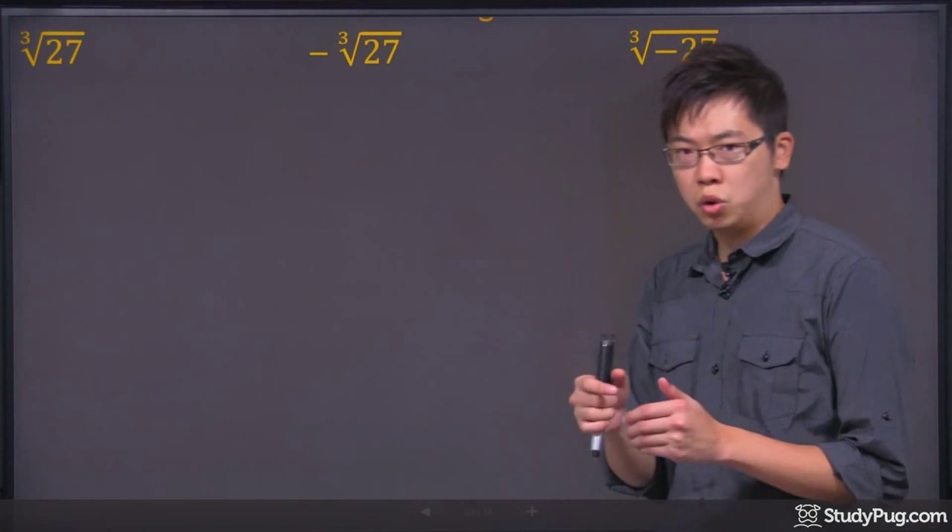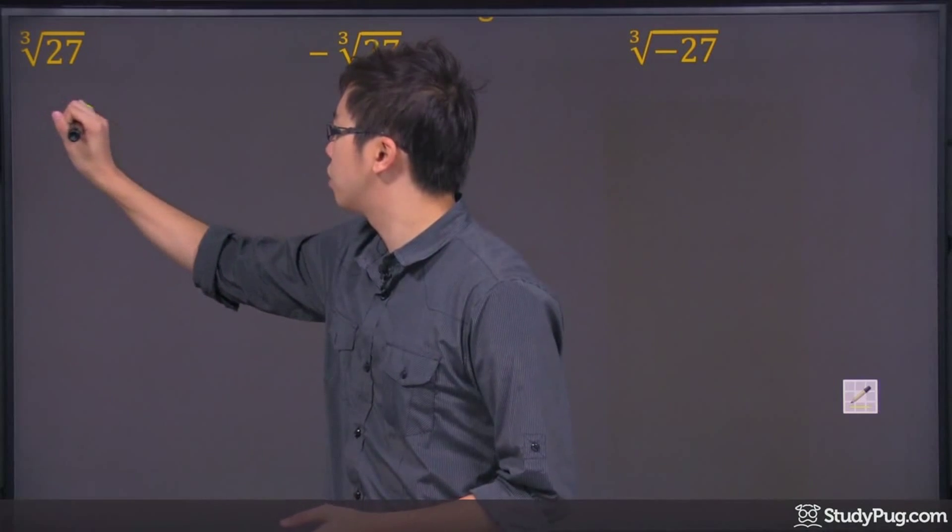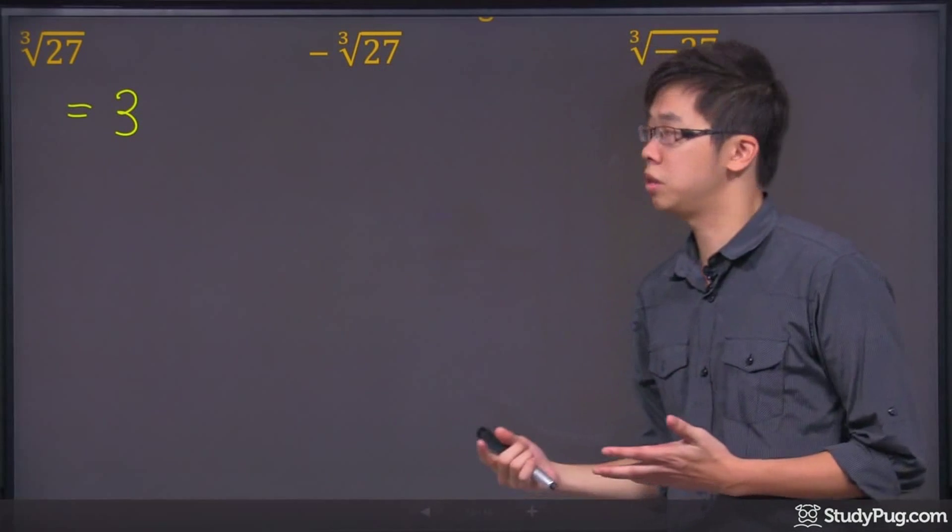So graphic calculator, if you punch in the cube root of 27, you should get the answer that says 3, which is nice and easy.